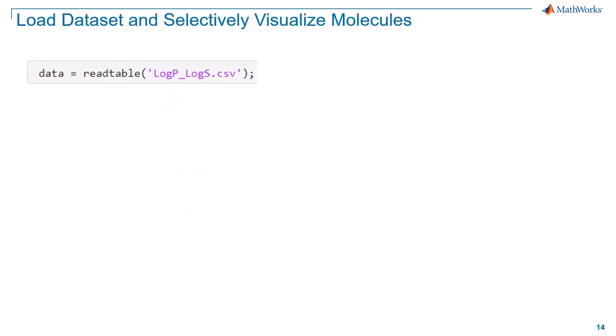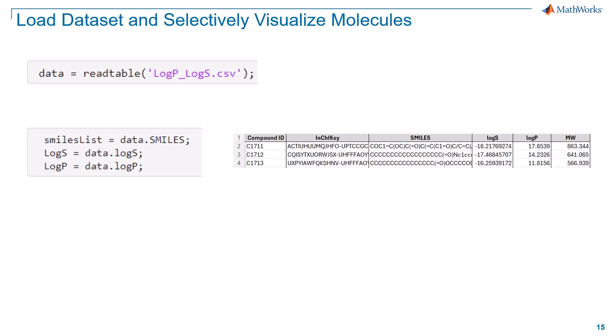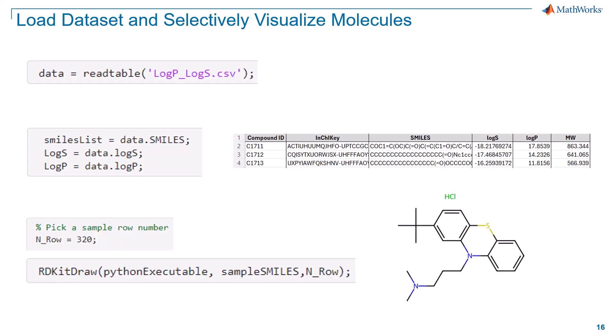Now, this example starts by loading the database into MATLAB. You can use the read table function for this purpose. It creates a table by reading column-oriented data from the CSV file. To access the data in the table, you simply specify the column headers. This way, you can simply draw any molecule by specifying its row number in the dataset.